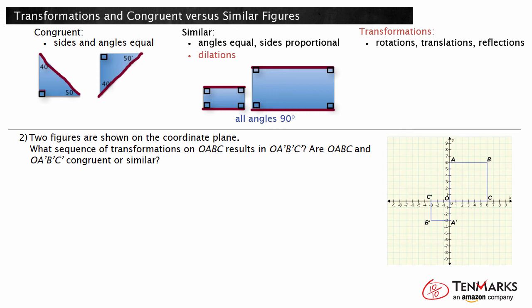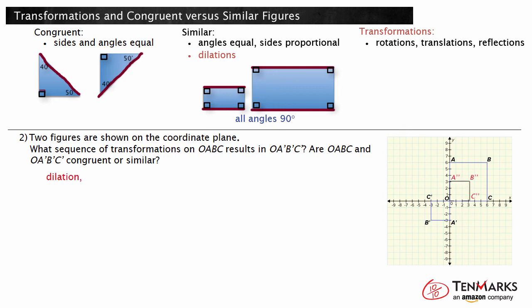One choice for the first transformation is a dilation. The side lengths of square O, A, B, C are 6 units long, while the side lengths of square O, A', B', C' are 3 units. The side lengths decrease by half, so a dilation with a scale factor of 1 half is needed. Dilations are centered at the origin, so the point O is fixed, and the distance from the origin of points A, B, and C all decrease by half.